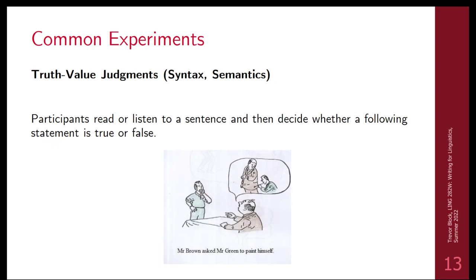Truth value judgments are another major paradigm — usually a person's first experiment — where people have to choose whether something is true or false. If you're doing semantics or syntax, this is what you'll normally do in the form of a comprehension question to make sure people are paying attention. You give them a sentence, ask a question about it, and they say true or false, or yes or no.